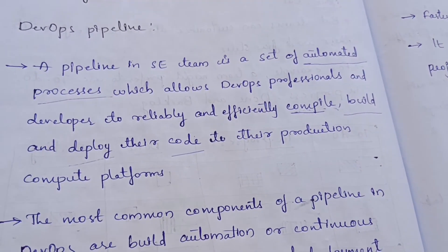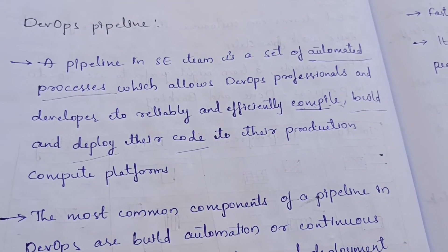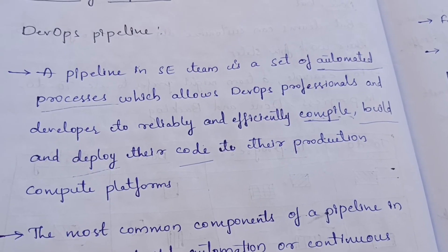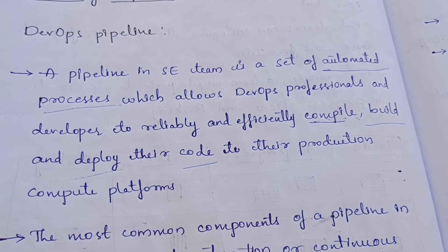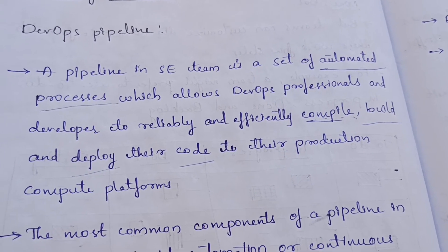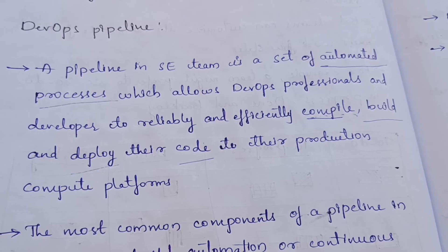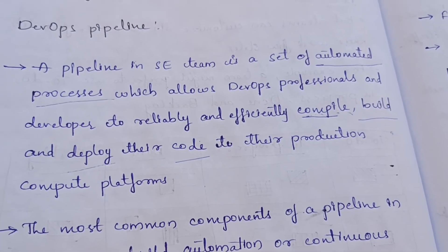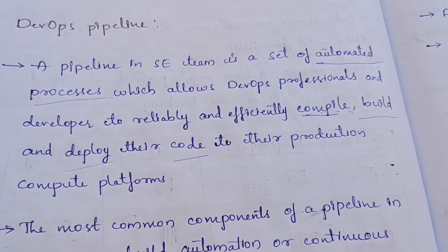The code is compiled, built, and deployed automatically in the pipeline to the production compute platforms.